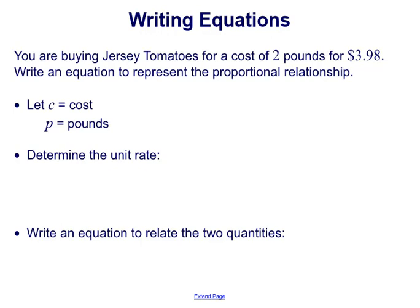We can define our variables. What are the two things we're talking about for the situation? Well, we have the cost of 2 pounds of tomatoes for $3.98. So we're talking about a cost, the $3.98, for a certain amount of pounds or the weight of tomatoes.